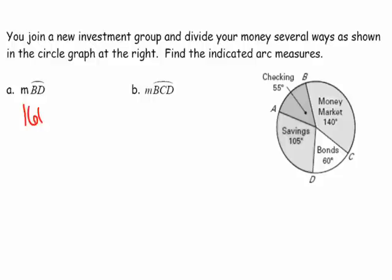Arc BD is 160 degrees and arc BCD is 200 degrees. How do we know BD goes which way? If the arc were greater than 180 degrees, it would be a major arc requiring three letters. BD with only two letters is the minor arc — it must be less than 180 degrees.